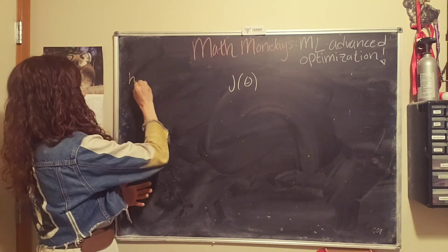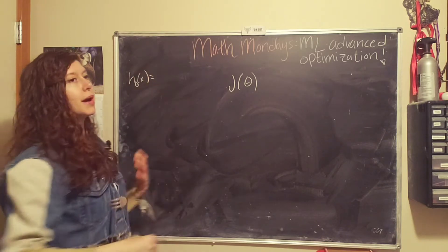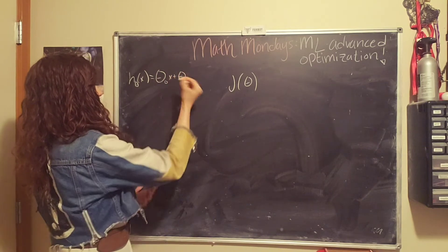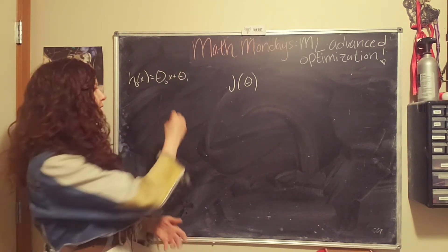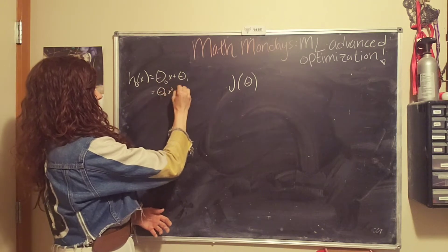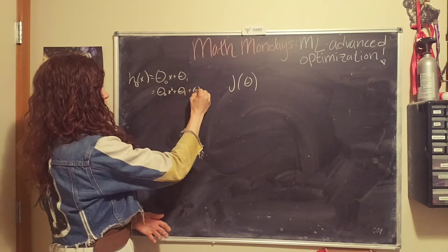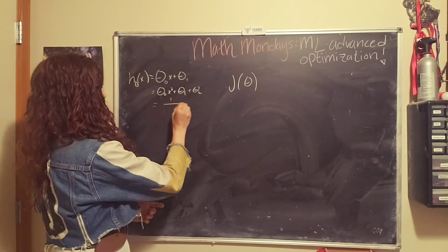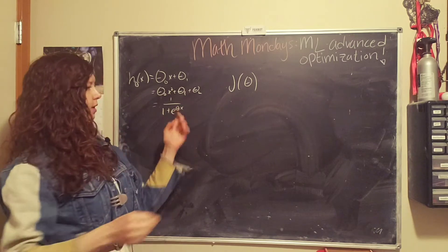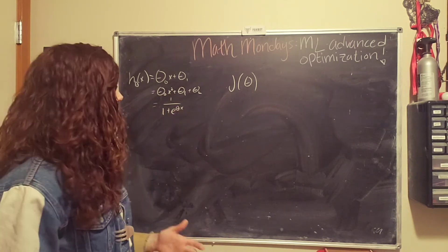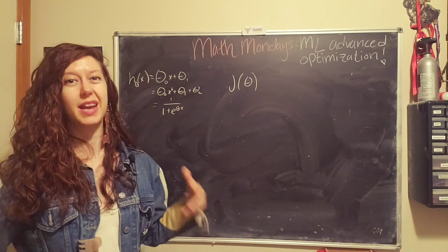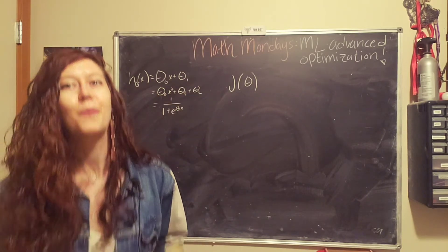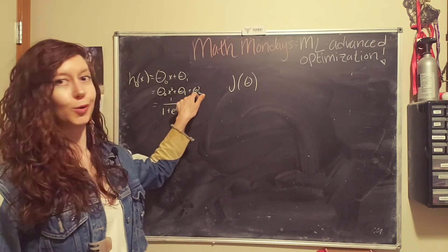Let's really quickly look at the hypothesis function. So the hypothesis function, h theta of x, might have a form of a line. So maybe it's theta naught x plus theta 1. Maybe it's a parabola, which would be theta naught x squared plus theta 1 plus theta 2. Or maybe it's something totally different, like we looked at in logistic regression. So 1 over 1 plus e to the theta x, where theta is a matrix. It can have many different values, and often it's going to be a really long polynomial with a lot of different parameters theta.